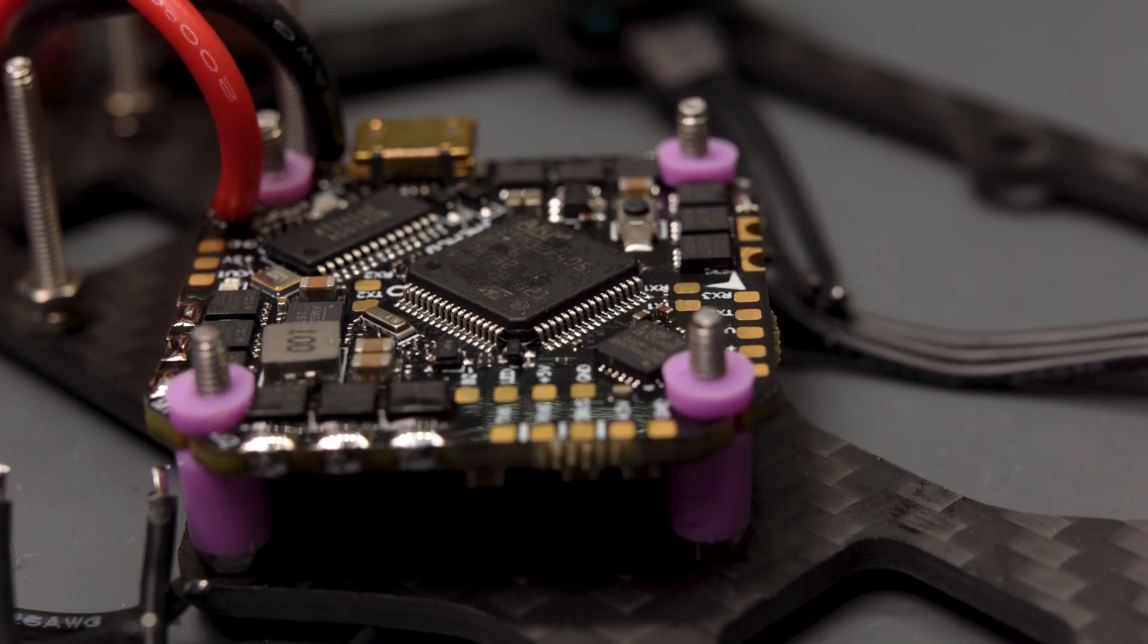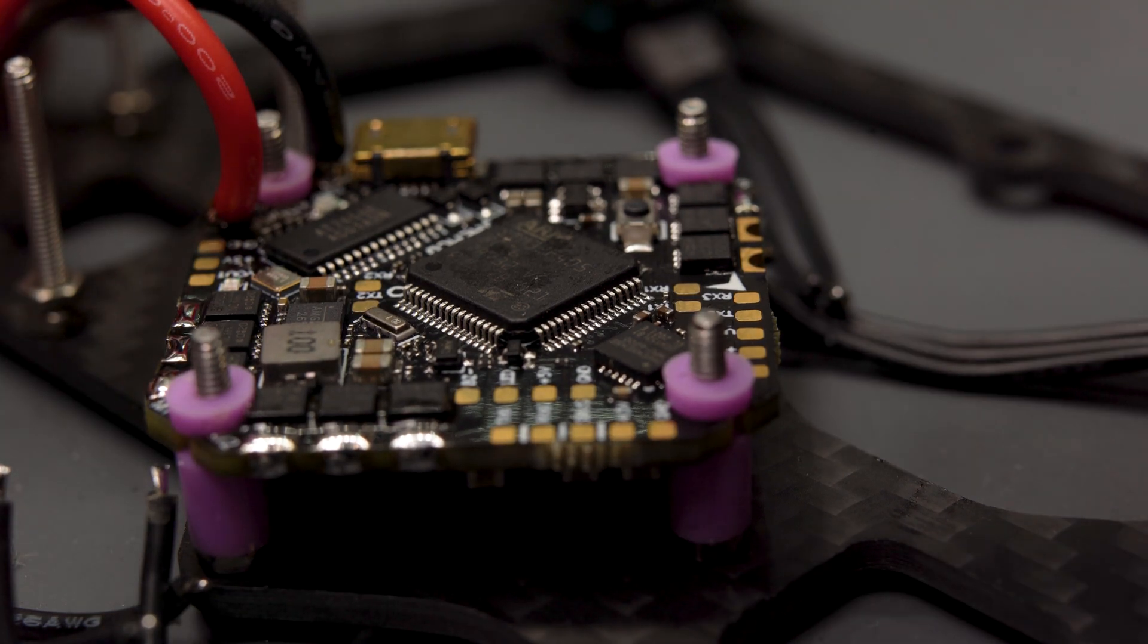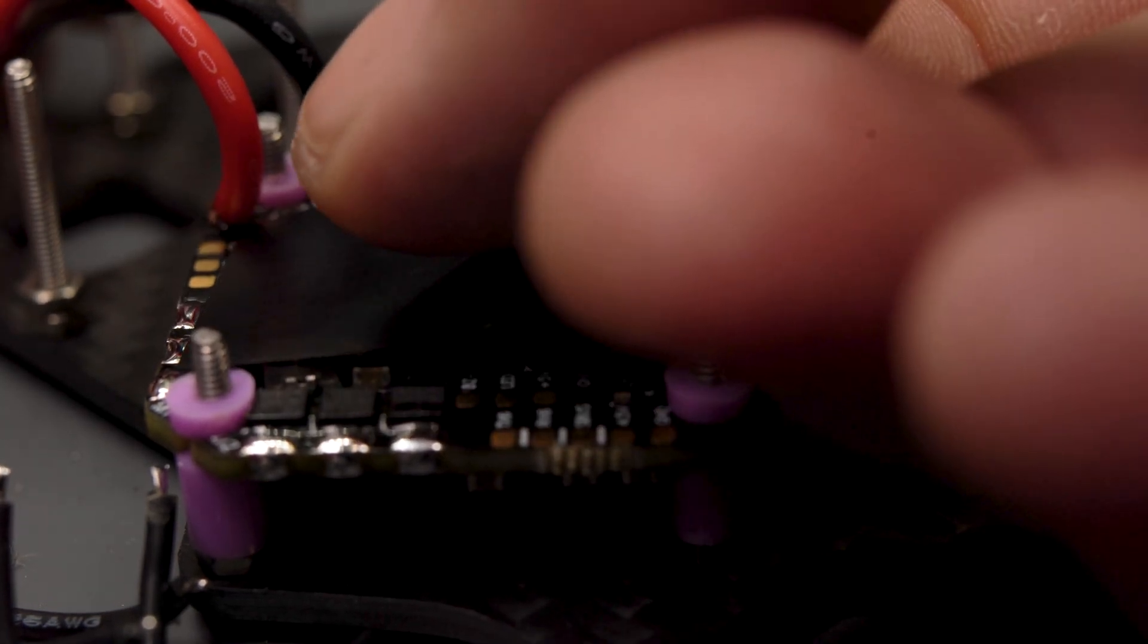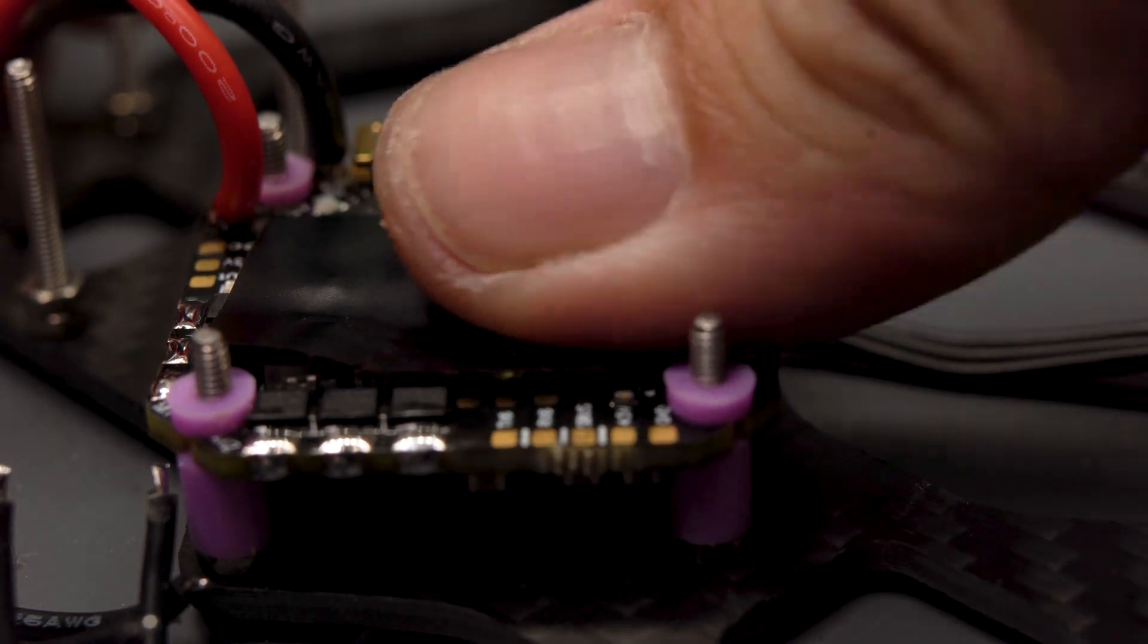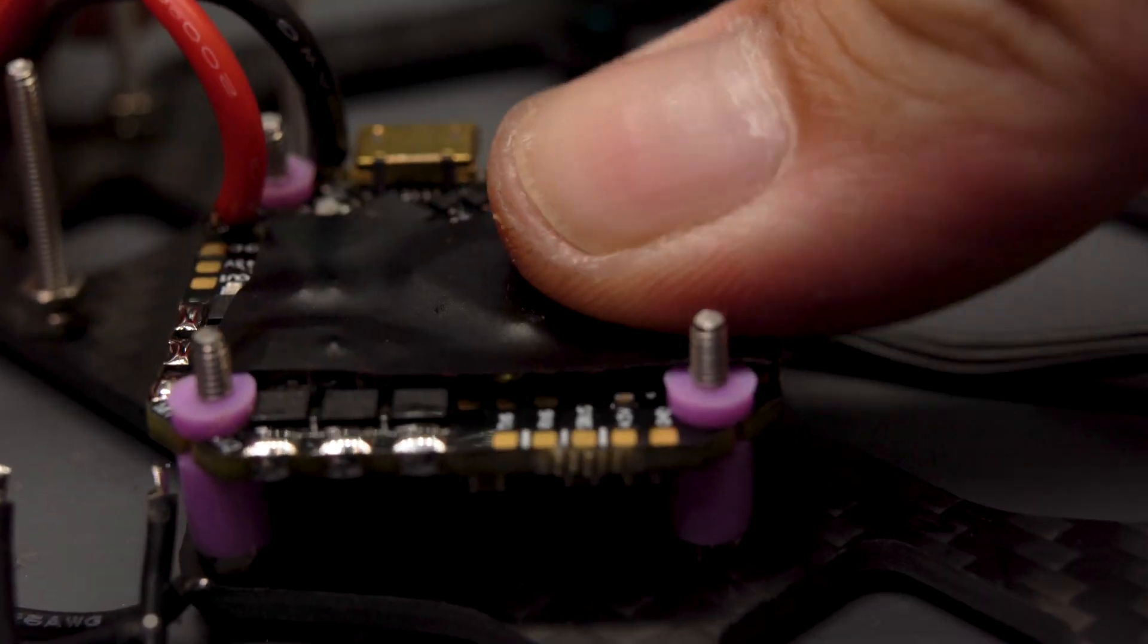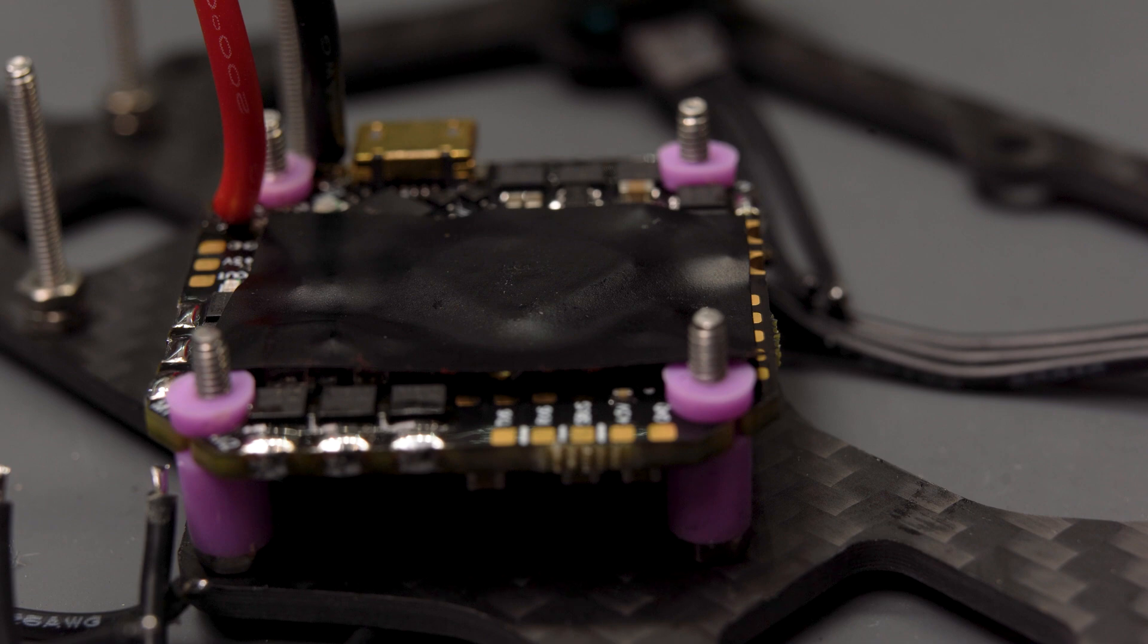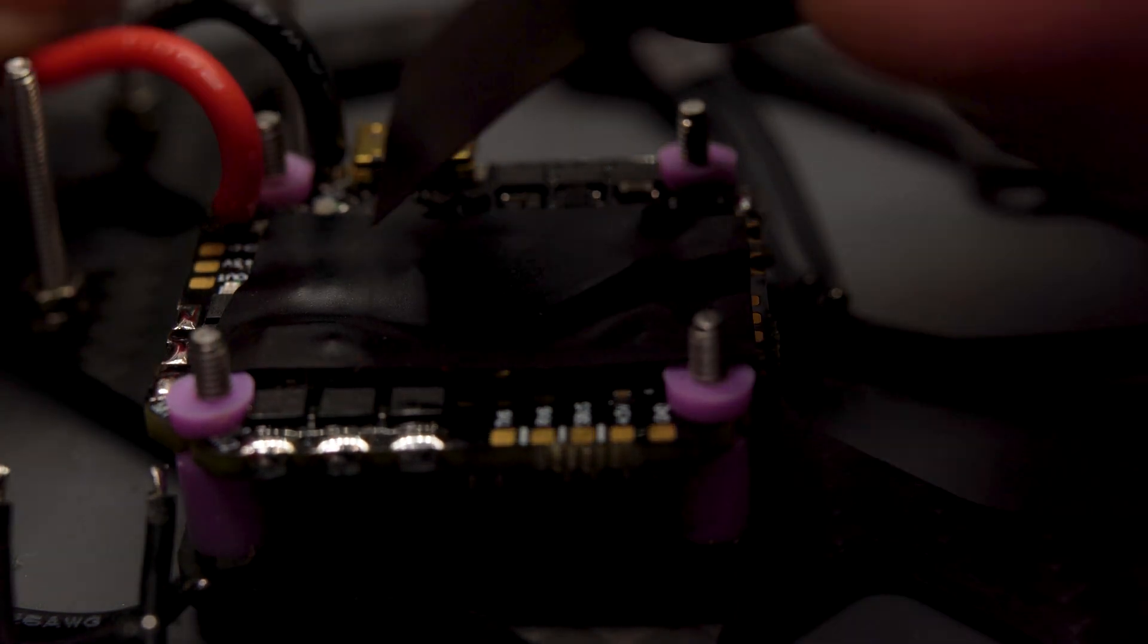Tip number seven, a tip that kind of fits in with this one is if you don't want to worry about it you can add some electrical tape to the flight controller itself and this prevents unwanted solder spray which even after building all these drones still happens where you're soldering and a little bit of solder just kind of flicks off onto one of the components and then it's causing you problems.